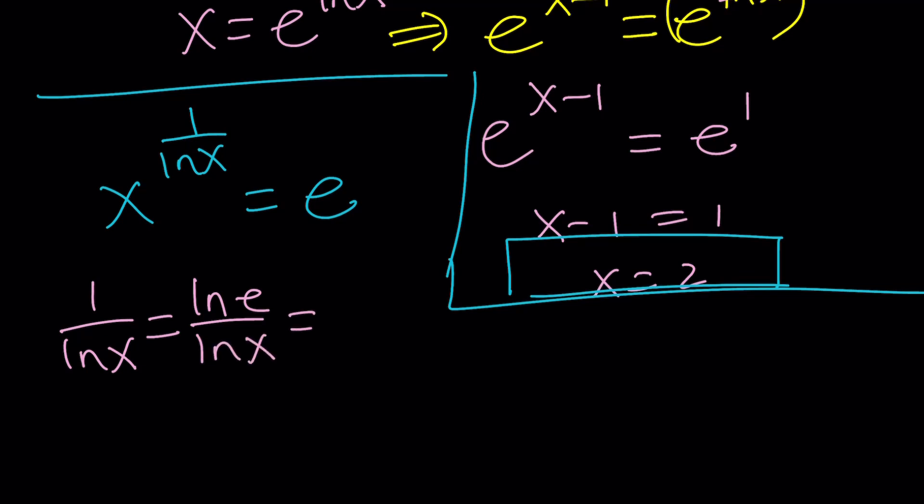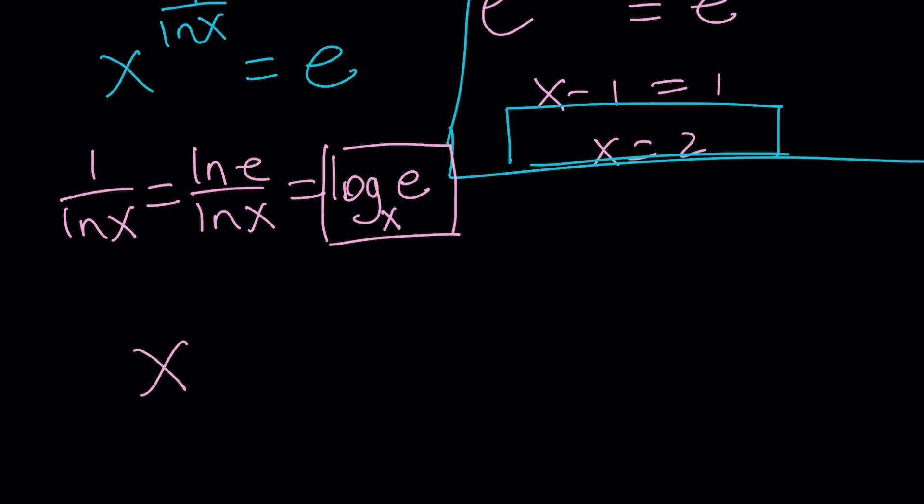And then by using the change of base in the opposite direction, like unchange of base, you can write this as log x or base x of e. How do you say that? Log with base x of e, or log e with base x. It's kind of weird. Anyways, now let's go ahead and replace 1 over ln x with that. We get x to the power log e with base x. And now why is this equal to e? Because we have this special rule that says, abracadabra, hocus pocus, when the bases are the same, they cancel out, leaving us with e. Hmm, interesting.